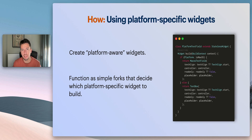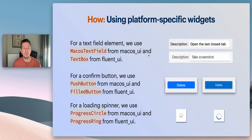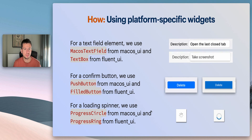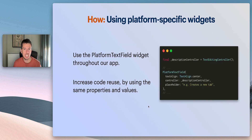We then create so-called platform-aware widgets. These function as simple forks — stateless widgets that decide which platform-specific widget to build. So if the platform is macOS, we build a macOS text field; if it's Windows, we build a text box. These are both provided by the macOS UI and Fluent UI libraries and render differently for each platform. For example, the macOS version has more rounded corners while the Windows one has a different drop shadow. The same can be done for other components like the confirm button or the loading spinner. This way, we can use the platform text field widget everywhere we need and pass the same properties — like the controller or placeholder — to increase code reuse.